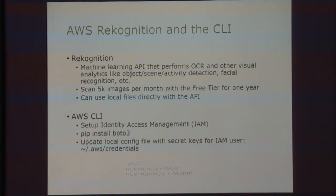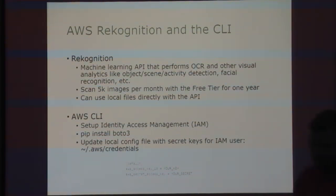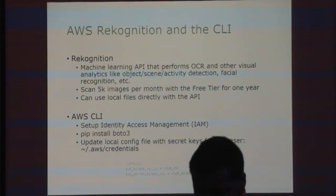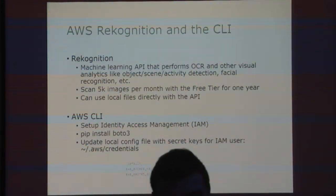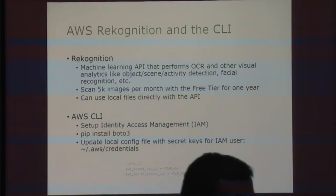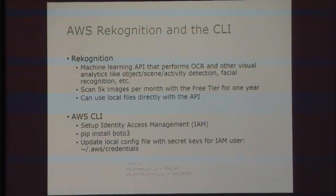So what is AWS Rekognition? It's a machine learning API that performs OCR. You can also extract things like facial recognition, object, scene, and activity detection, which I'll show you at the end. You get 5,000 images per month for an entire year for free — after that we're talking pennies, so super cheap. This is not a plug for AWS — there's also Google Cloud Vision, Microsoft, SimpleCV, OpenCV, and Tesseract. They're all fantastic engines with a little more effort and training required.